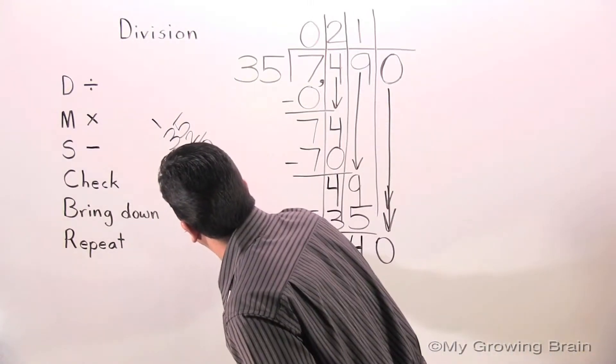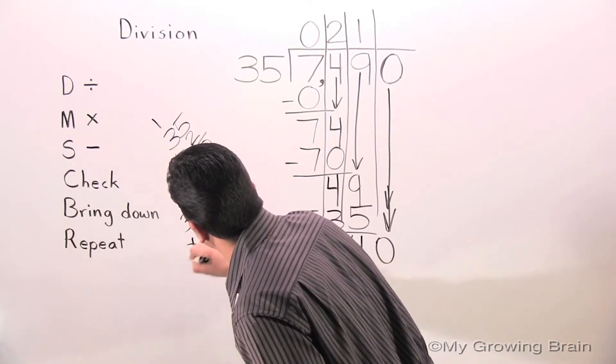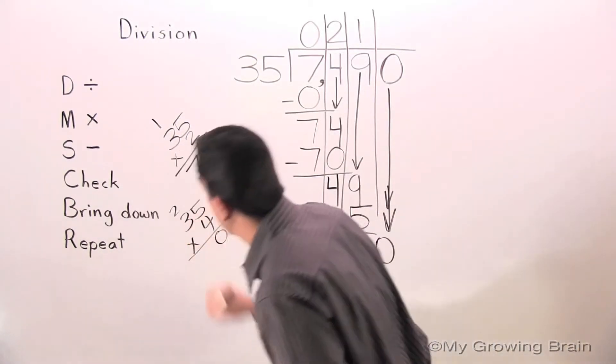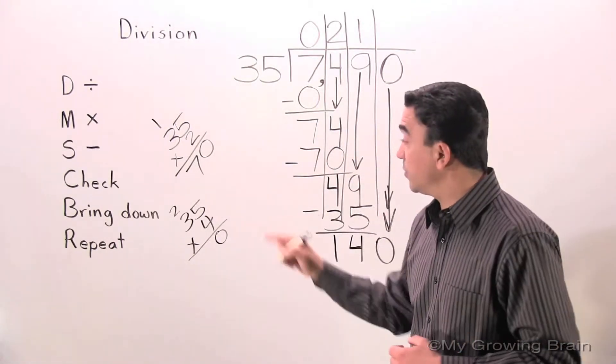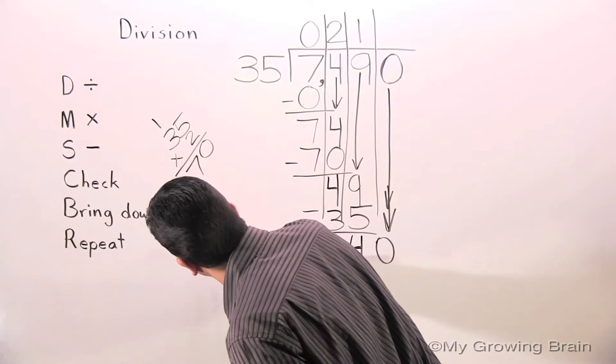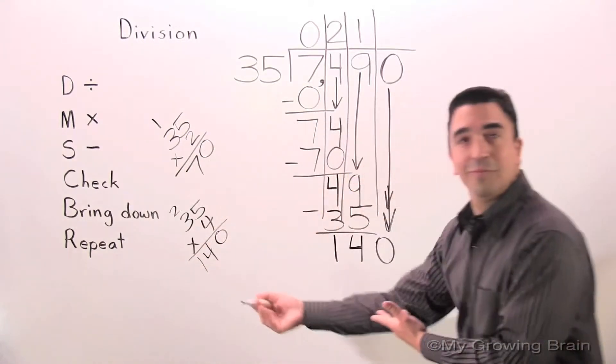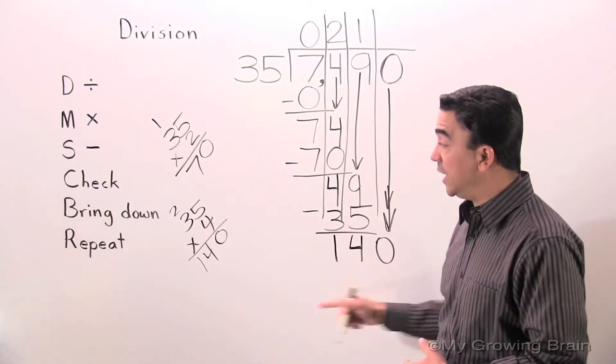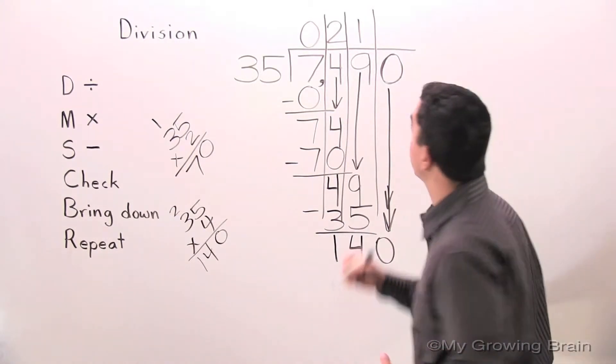35 times 4. 4 times 5 is 20. Regroup the 2. 4 times 3 is 12, plus 2 equals 14. What do you know? Same number. We know that 35 goes into 140 four times.